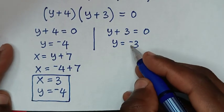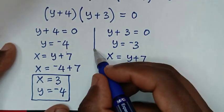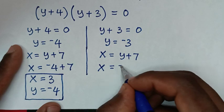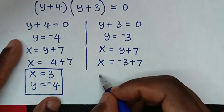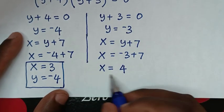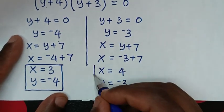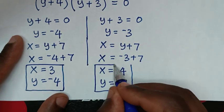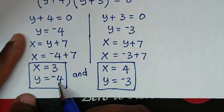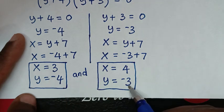For the second solution, substituting y equals negative 3 into x equals y plus 7: x equals negative 3 plus 7, so x equals 4. Therefore the second solution is x equals 4 and y equals negative 3.